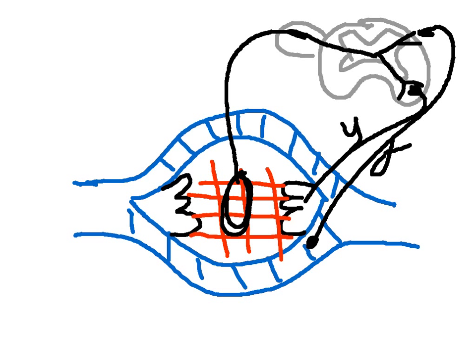If we cut the dorsal root and remove it from the equation, you no longer have the reflex. You can no longer synapse through the afferent pathway onto both motor neurons simultaneously. However, you can experimentally choose to stimulate one independently. So if you were to just stimulate the alpha motor neuron, would it increase or decrease the firing of the afferent neuron?